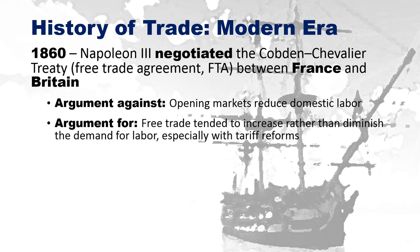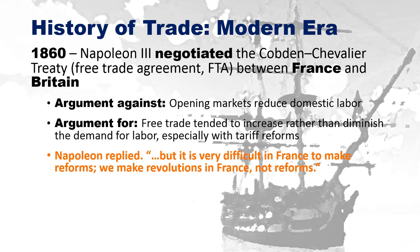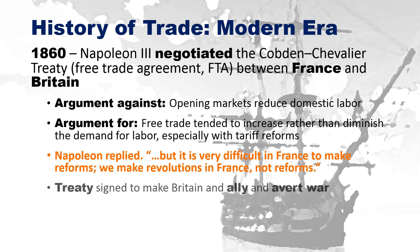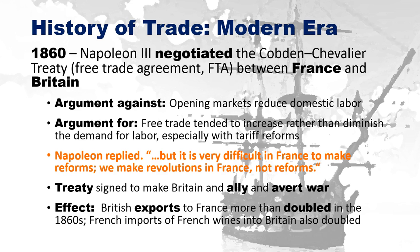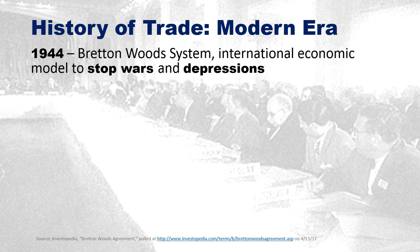Addressing tariff reforms would open up markets and increase demand for labor. Napoleon famously said it is very difficult in France to make reforms — we make revolutions instead. But he ultimately saw the wisdom of it, signed the treaty to make Britain an ally, and averted war. The effect was that British exports to France more than doubled, and French wine imports into Britain also doubled, so French wines were being consumed outside French borders and generating revenue.